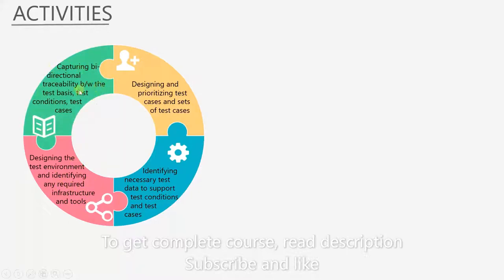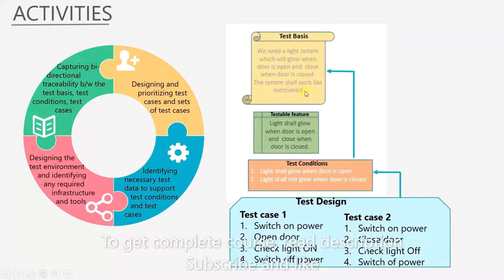And the last activity is capturing bi-directional traceability between the test bases, test conditions, and test cases. This is very important. In test analysis, we saw that bi-directional traceability is maintained between test bases and test conditions. Now, that includes test cases as well. In this example, we have previously seen the traceability between test bases and test conditions. Now, we see that there is traceability between test design and conditions as well. So wherever you are, you can find matching data in any of these stages.